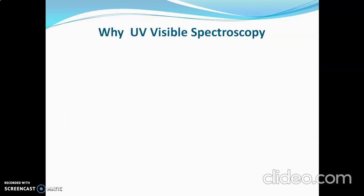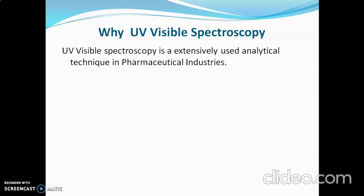UV-visible spectroscopy is extensively used as an analytical technique in the pharmaceutical industry. The first reason is accuracy — UV-visible spectroscopy is a highly accurate technique, generally used for quantitative analysis such as determination of concentration or percentage purity.